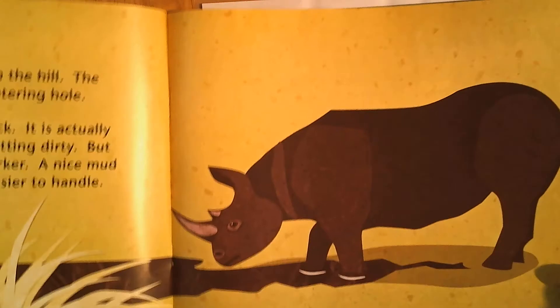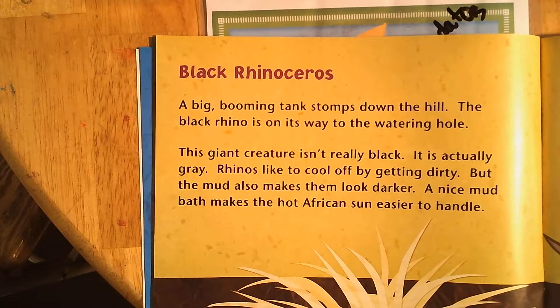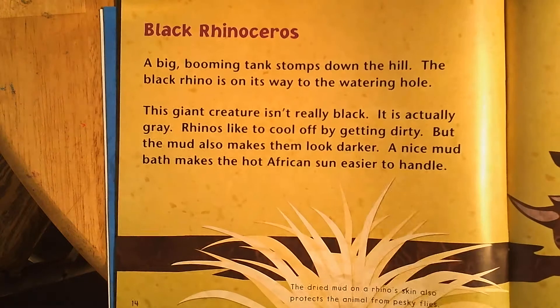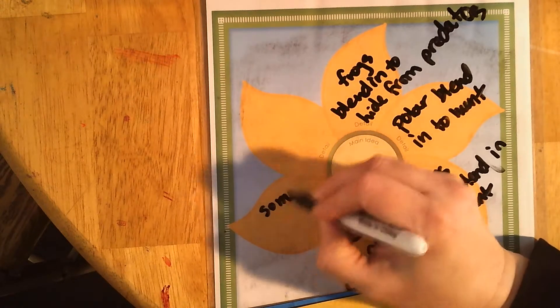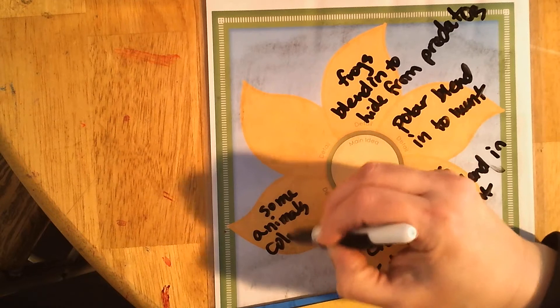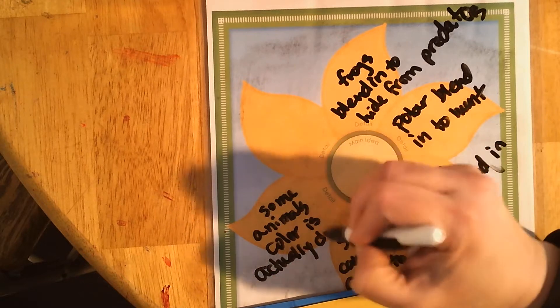Black rhinoceros! A big, booming tank stomps down the hill — the black rhino is on its way to the watering hole. This giant creature isn't really black; it is actually gray. Rhinos like to cool off by getting dirty, but the mud also makes them look darker. A nice mud bath makes the hot African sun easier to handle. The dried mud on a rhino's skin also protects the animal from pesky flies. So some animals' color is actually different than it looks.